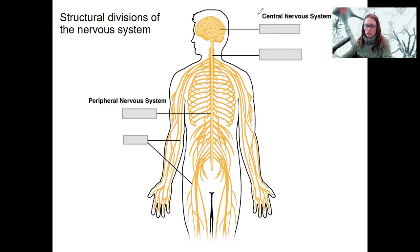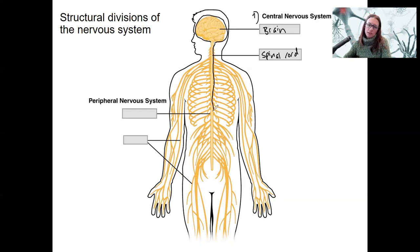The two structural divisions are the central nervous system, which is the brain and spinal cord. This big thing here, and the spinal cord is just the cord itself — the central part.